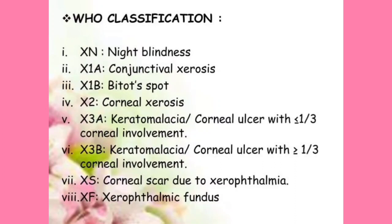XN is night blindness — from the 'N' you can remember night blindness. X1 can be divided into X1A and X1B. X1A is conjunctival xerosis, meaning drying of the conjunctiva. X1B means Bitot's spot — from the 'B' you can remember B for Bitot's spot.